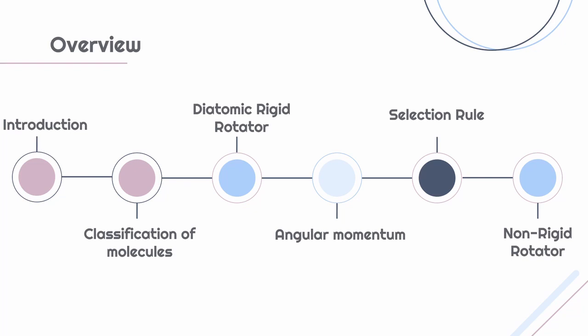We'll start with a brief introduction and then look into the classification of molecules based on their moments of inertia, and then discuss diatomic rigid rotator, angular momentum, selection rule and we'll end with the discussion about non-rigid rotators.